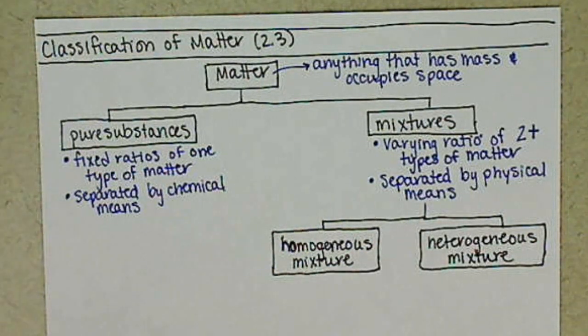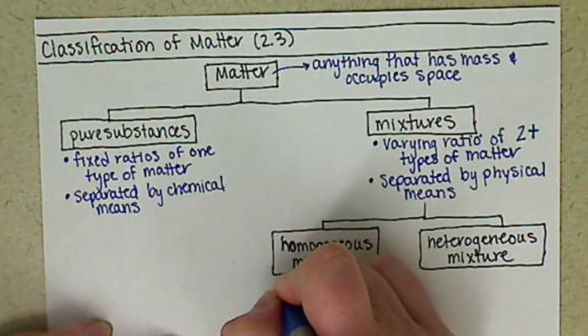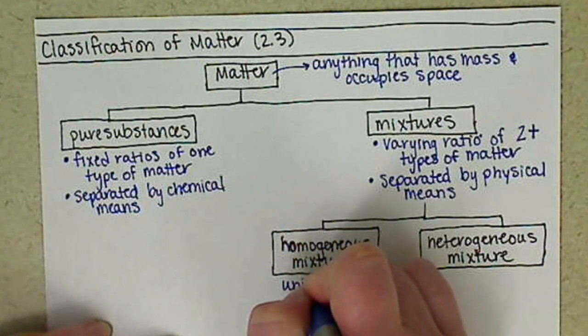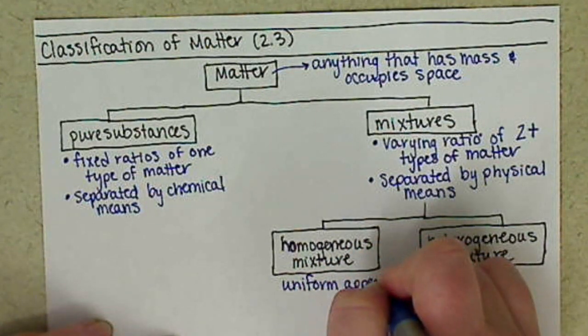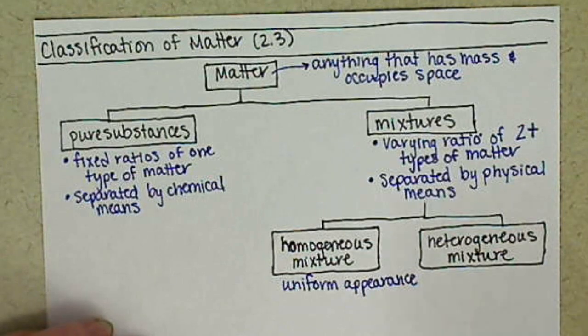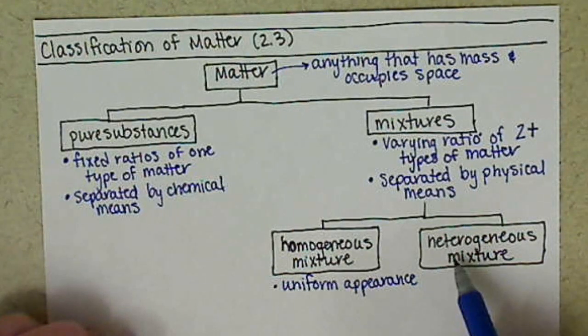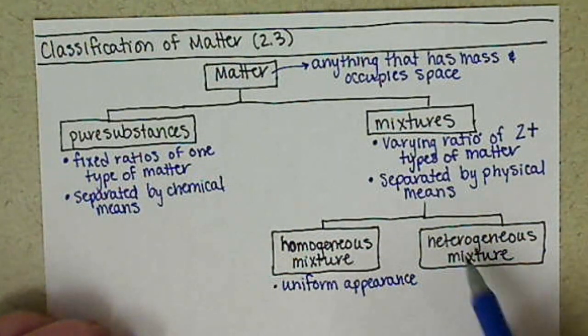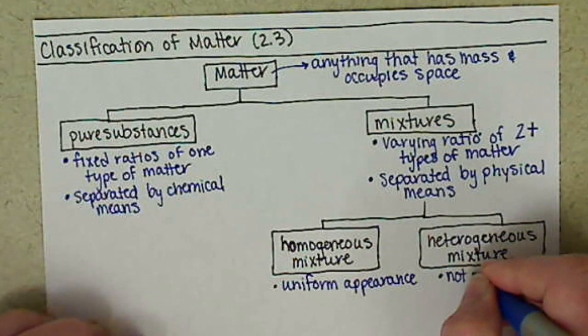For our homogenous mixture, this is going to look uniform in its appearance. So it's basically going to look the same throughout. Whereas our heterogeneous mixture, this is not uniform. So it's going to look different.